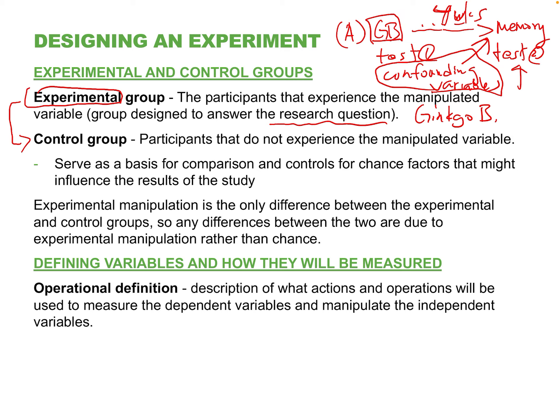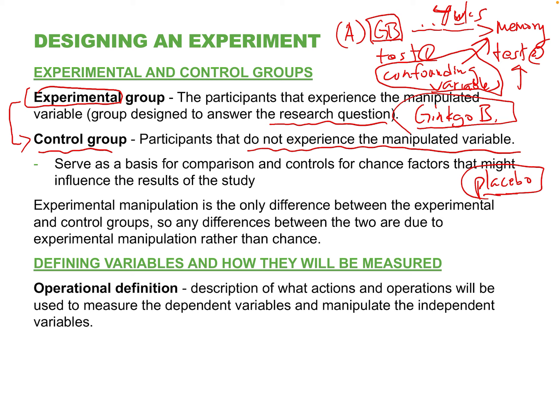In an actual experiment, you need a control group — a comparison group that does not experience the manipulated variable. Often you'd have two control groups: one that has the same general experience as the experimental group but just doesn't take ginkgo every day, and a third group that takes a placebo — a pill made to look like the real thing but made of a substance like sugar with no real effect. It's a fake pill, a fake treatment.